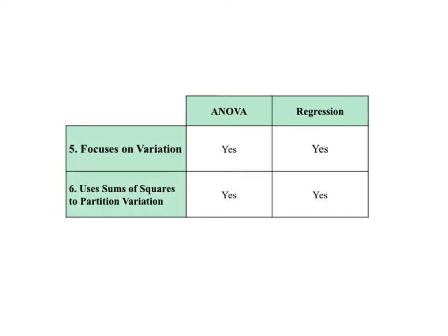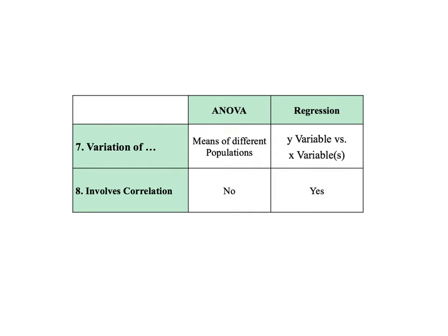The main conceptual similarity between ANOVA and regression is that they both analyze variation, as measured by sums of squares, to come to their conclusions. For both ANOVA and regression, the total variation is partitioned into two components, though how they do that is very different. Both ANOVA and regression use variation as a tool, but the kinds of variation analyzed by each are quite different, because the types of questions they attempt to answer are very different.